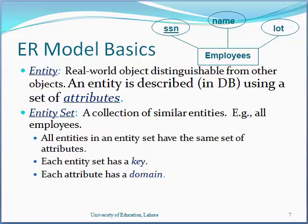The entity relationship model is used to describe the elements of a system and their relationships. This model was introduced by Peter Chen in 1976. This model represents the conceptual view of our database along with its entities and relationships in an easy way.